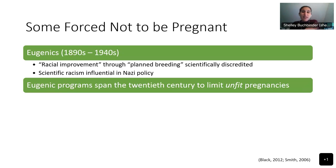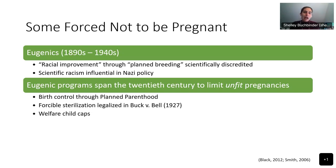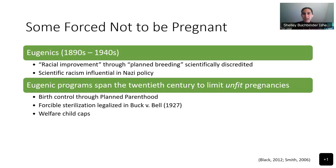Eugenic programs span the 20th century, and their goal was to limit so-called unfit people's pregnancies to achieve racial purity. Some examples of these policies included birth control through Planned Parenthood. Very famously, the founder of Planned Parenthood, Margaret Sanger, was in favor of eugenic policies and wanted to see a decrease in immigrant pregnancies and births. That was some of the impetus for the founding of Planned Parenthood — a difficult history that's important to think about, because many people still feel very negatively about Planned Parenthood fearing eugenic elements remain.